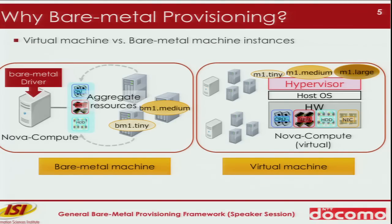Also, in case of virtual machines, one Nova compute is dedicated for one physical machine, so many virtualized instances can be running on that system. However, in case of bare-metal systems, one Nova compute node should be dedicated for multiple bare-metal machines. So Nova compute node should aggregate multiple bare-metal resources, and those capability information should be sent to the scheduler. Based on that aggregated capability information, the Nova scheduler schedules bare-metal instances to the bare-metal Nova compute node.